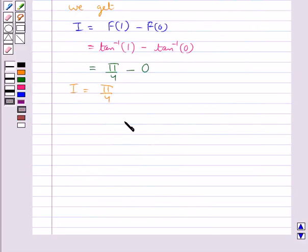Thus our final answer is integral 0 to 1 dx over 1 plus x squared is equal to pi by 4.